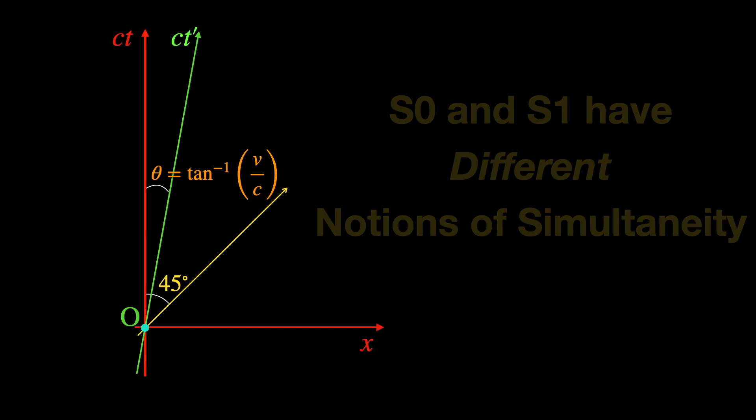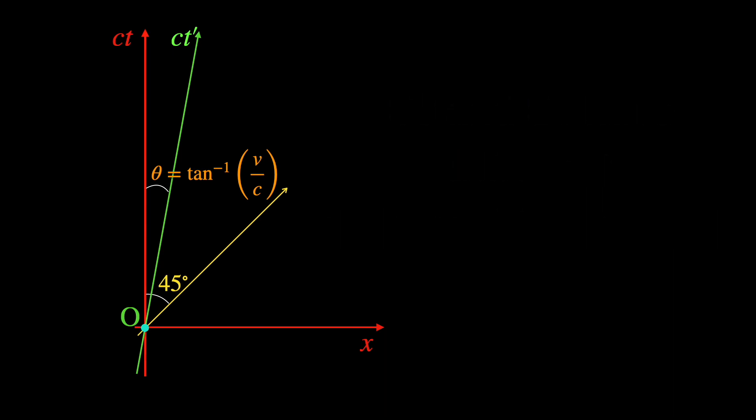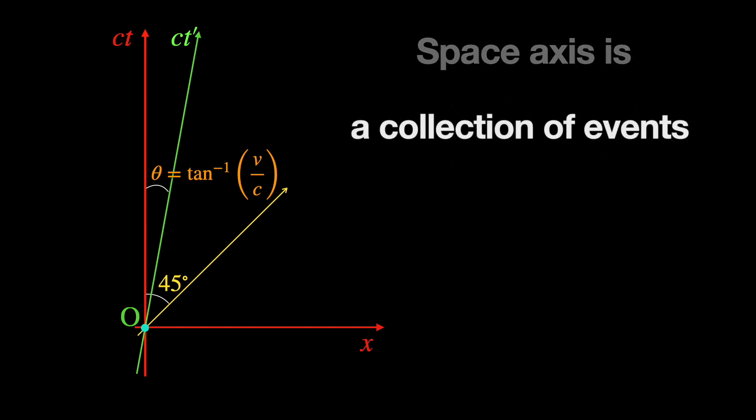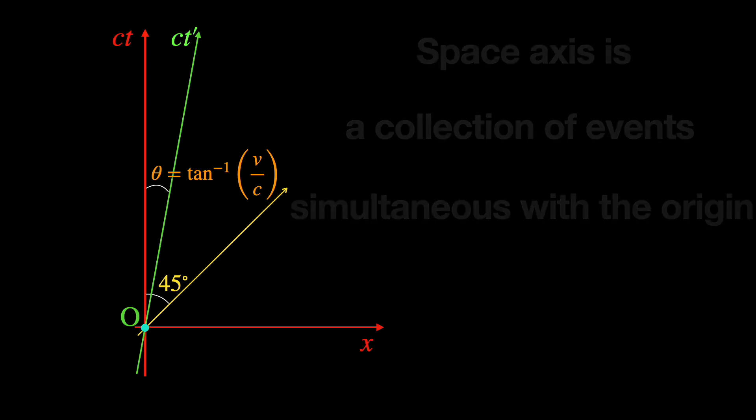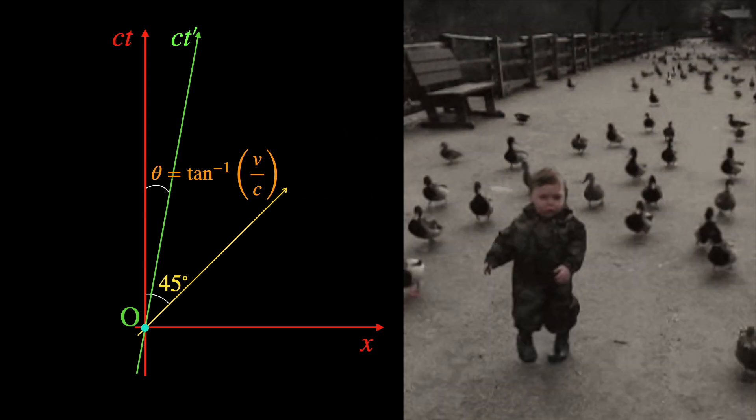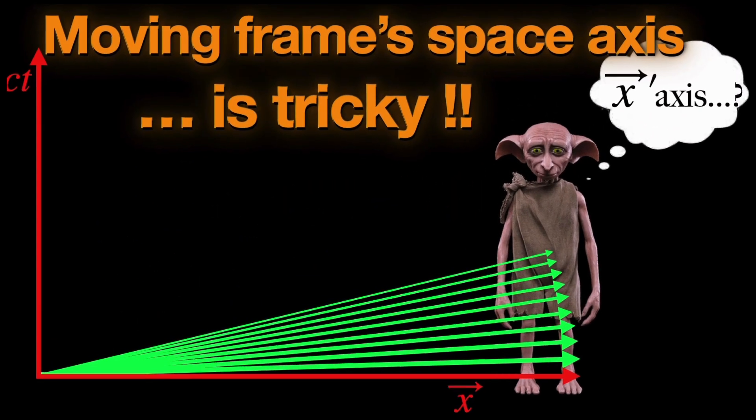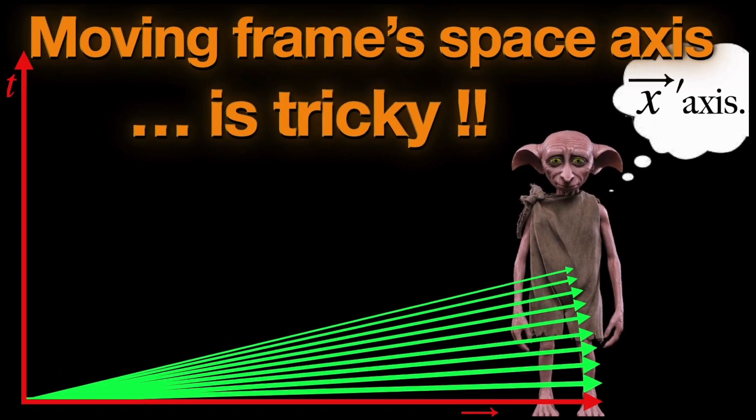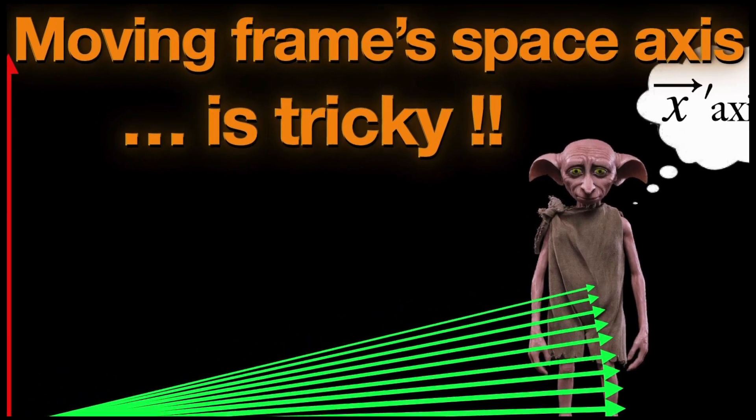So to draw the space axis of s1 we need to find events that look simultaneous with the origin event o from the perspective or point of view of s1 frame observers. Both the process and the logic that makes it work have been covered in the channel but for now let me give you a sneak peek.